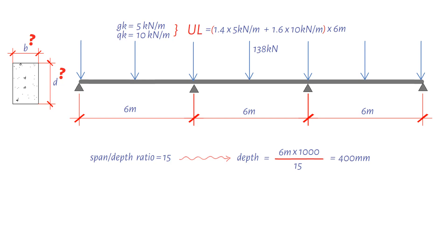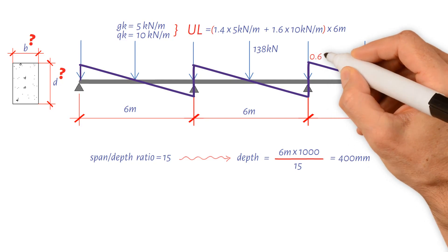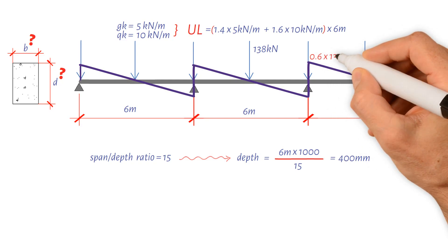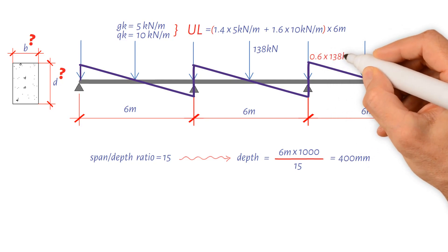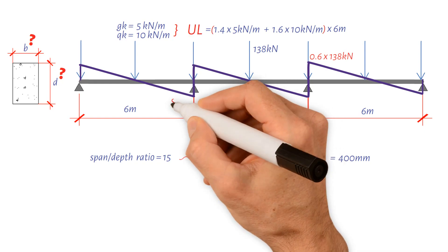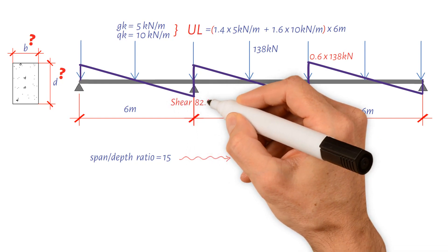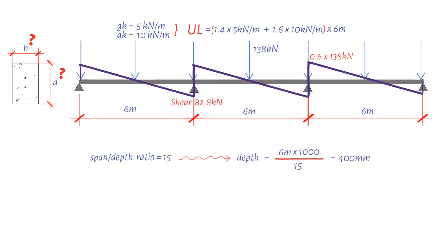For interior supports, the design shear force would be 0.6 times the total ultimate load of 138 kilonewtons. This gives us a value of 82.8 kilonewtons.